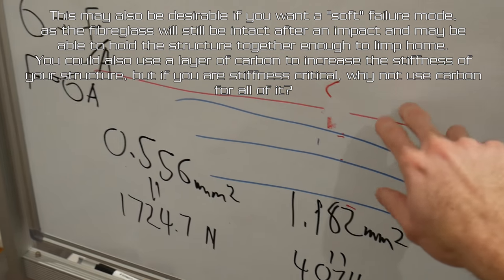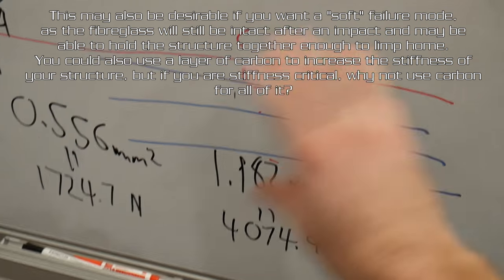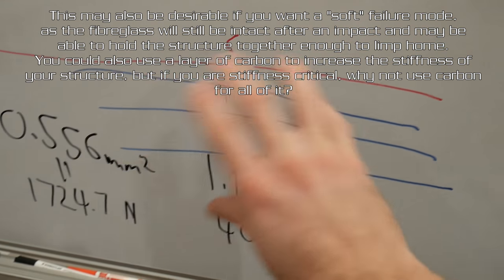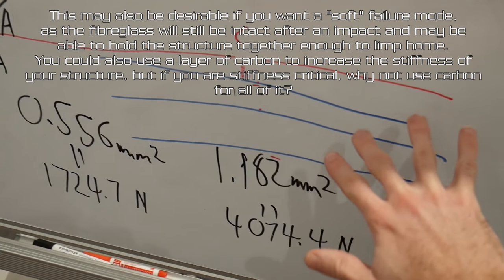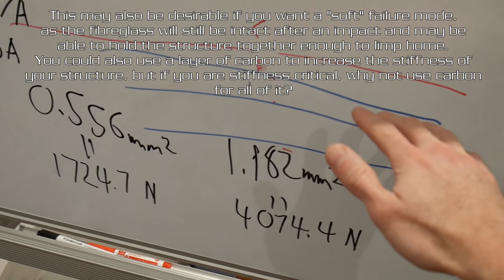The key thing to note is make sure that your stiffest material with the least elongation is the strongest thing of your laminate and therefore the last thing to fail, because then at least the other parts of the laminate will help it out along the way.